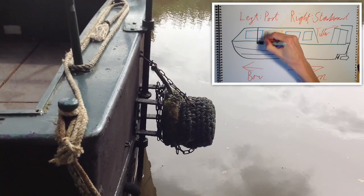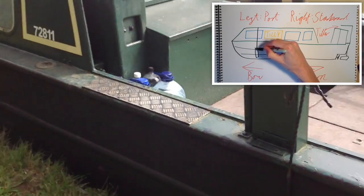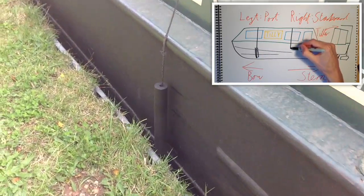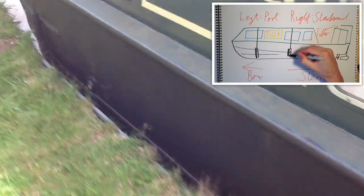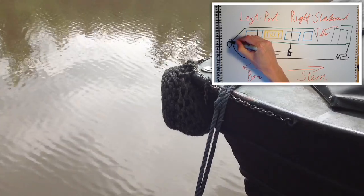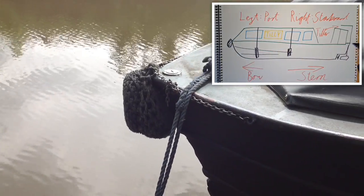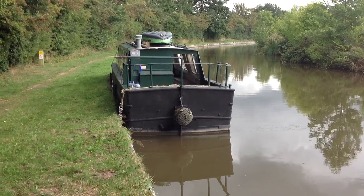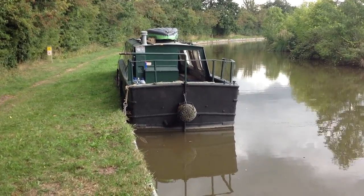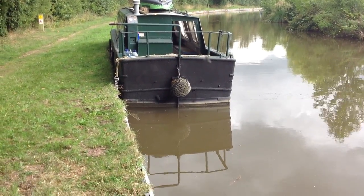The big rope bumper at the back just like these rubber ones at the side and also of course another rope one at the front are all known as fenders. The width of a boat is called its beam and the widest part on a narrowboat that's normally about six foot ten.